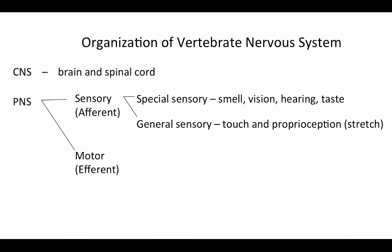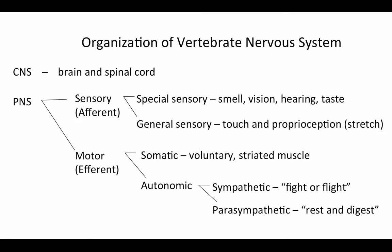The motor nervous system can be broken down into two components: somatic, which has to do with voluntary striated muscle, and the autonomic nervous system, which is generally related to the internal organs and the gut. The autonomic nervous system can be broken down into the sympathetic — the fight or flight part — and the parasympathetic, the rest and digest part, which counters the sympathetic component. The autonomic motor component covers involuntary things like heartbeat, intestinal contractions, and glandular secretions.